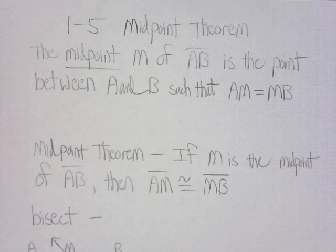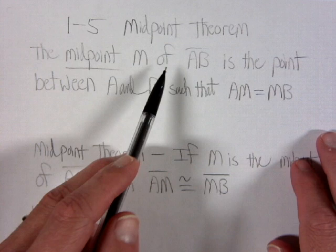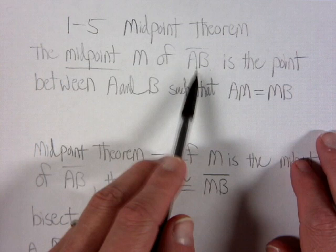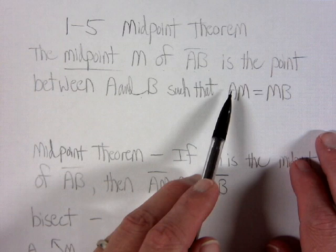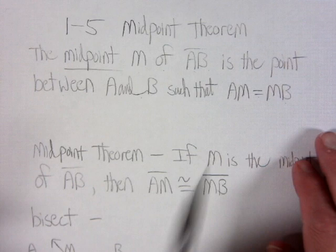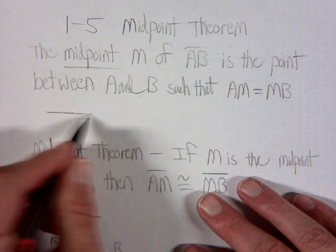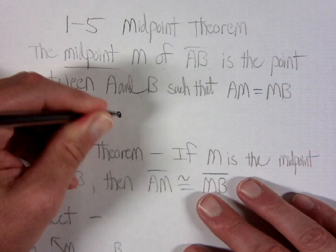In section 1-5 we're talking about the midpoint theorem. The first thing we come to is the definition. The midpoint M of segment AB — make sure you're reading your notation correctly — is the point between A and B such that the length of AM is equal to the length of MB.